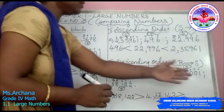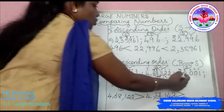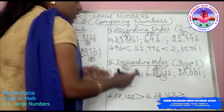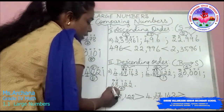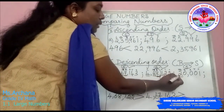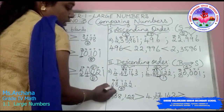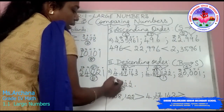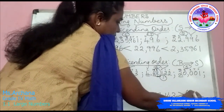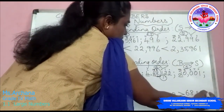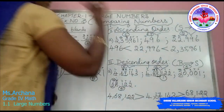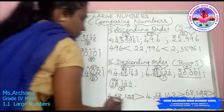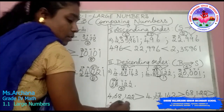After placing 4,68,122 first, the remaining 6-digit number 4,67,143 is the second largest, since 6 digits are greater than 5. For the two 5-digit numbers, comparing the highest place value: one has 6 and the other has 2. Since 6 is bigger, 68,122 is larger than 20,001. So the descending order places 20,001 last.